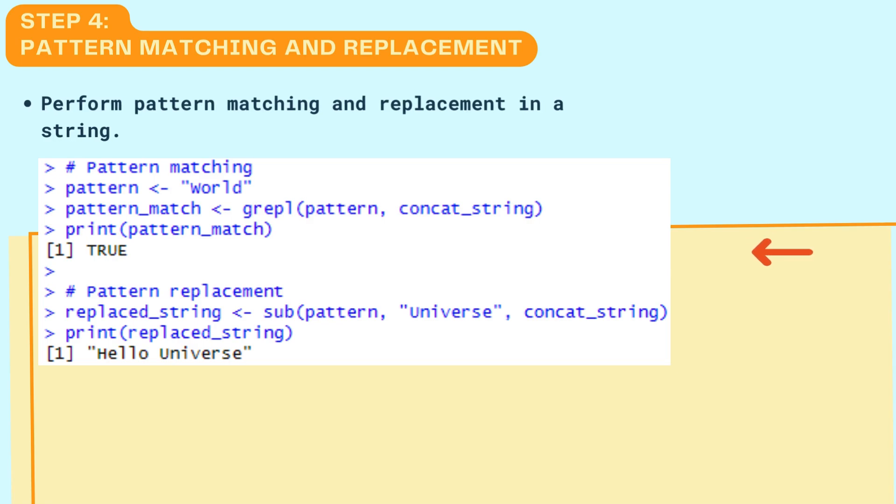Step 4: Pattern Matching and Replacement. Perform pattern matching and replacement in a string. We use the grepl function to check if the pattern 'world' exists in the concatenated string and the sub function to replace 'world' with 'universe'.